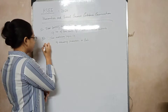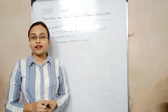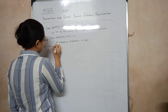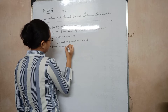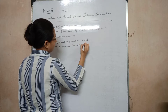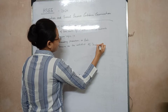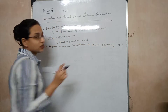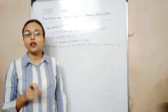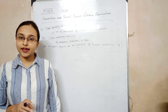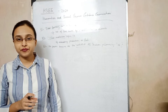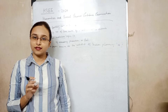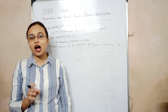Question number 83: The person known as the architect of Indian planning is... The options were: A. Amartya Sen. B. Sukhomoy Chakravarti. C. P.C. Mahalanobis. D. Jagdish Bhagwati. The correct option is C — P.C. Mahalanobis.